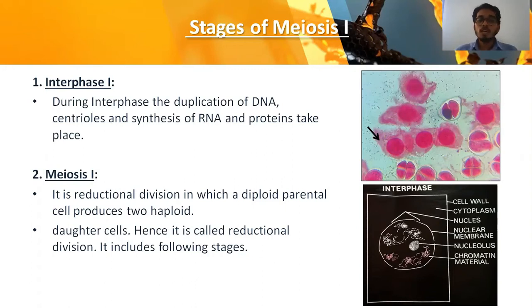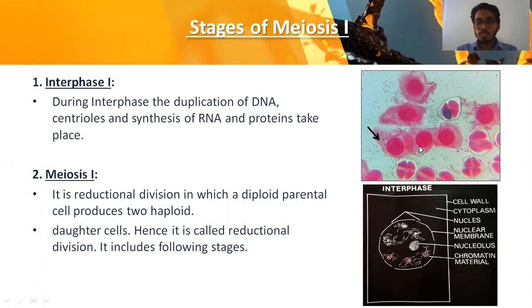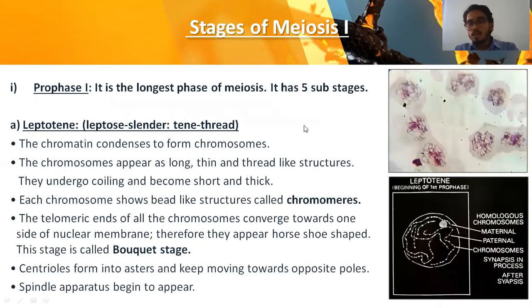Meiosis one is a reductional cell division in which a diploid parent cell produces two haploid daughter cells. Since two haploid cells are produced from one diploid cell, it is called a reductional division. Under the microscope, this is how cells appear in the interphase stage. Under meiosis one, you will find stages like prophase one, metaphase one, anaphase one, and telophase one.